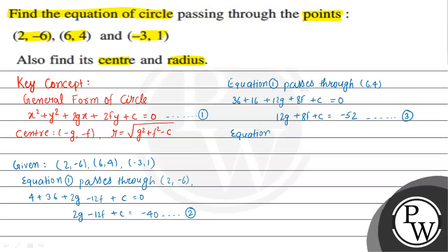Again, equation 1 passes through the third point (-3, 1), so with x = -3 and y = 1 we get 9 + 1 - 6g + 2f + c = 0, which gives -6g + 2f + c = -10. Consider this as equation 4.